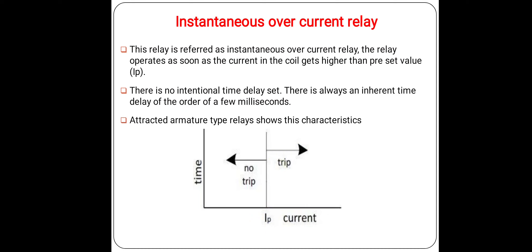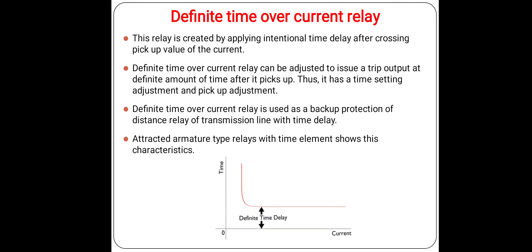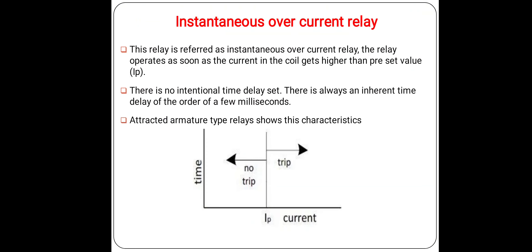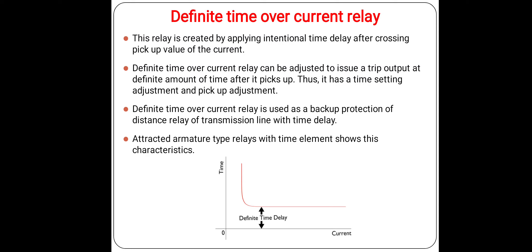When the value of fault current is less than the preset value, the relay will not operate. There is no time delay for this type of relay — whenever the current slightly exceeds the preset value, this relay operates immediately. That is why it is known as an instantaneous relay. When the current exceeds the preset value, this relay trips the circuit breaker.